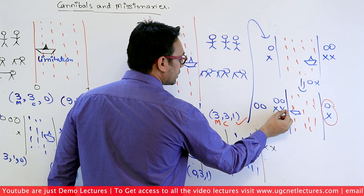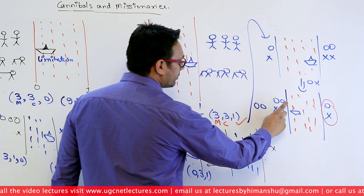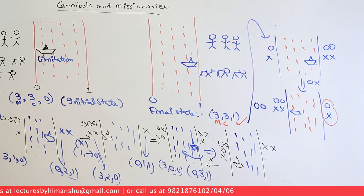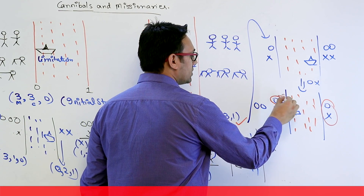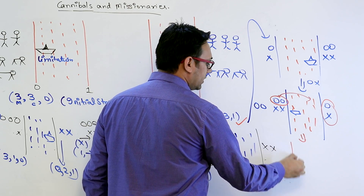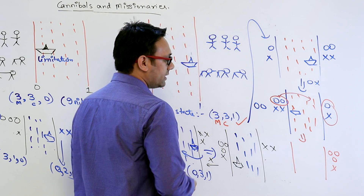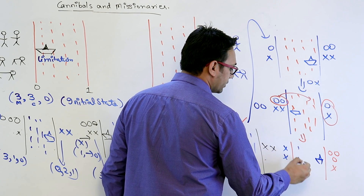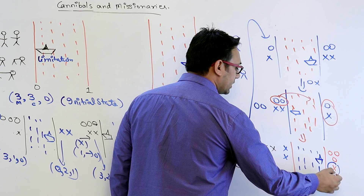One pair has reached that direction and we can follow similar steps to take both remaining pairs to that location. However, you cannot take just one cannibal or one missionary from this location to that location alone without violating the constraint. So both missionaries go to that direction, leaving one cannibal at bank 0 and two cannibals at bank 1.